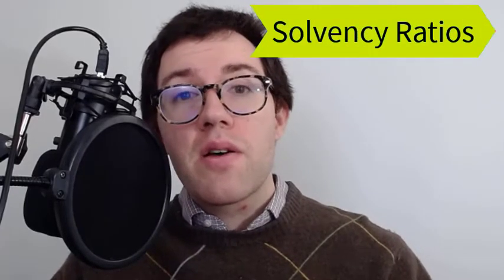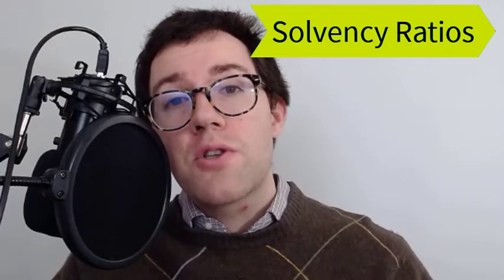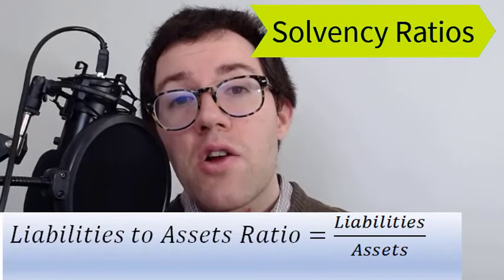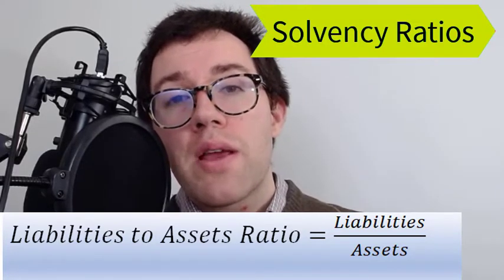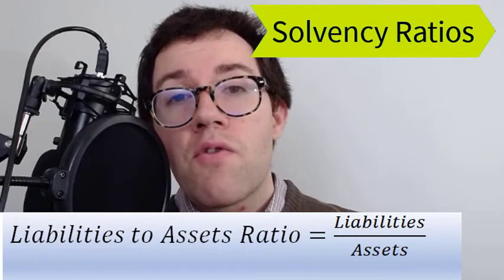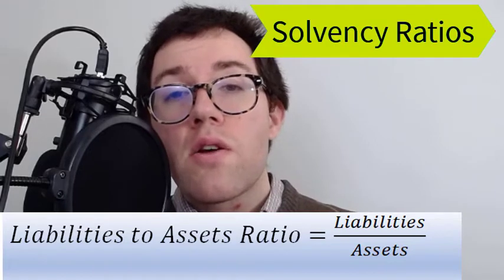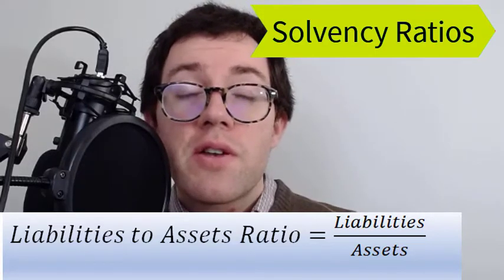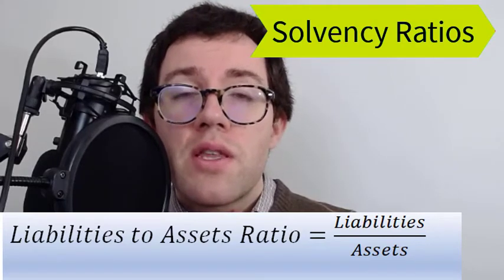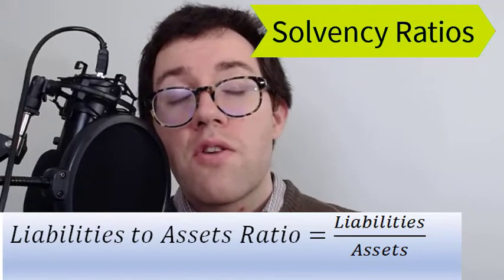Solvency ratios capture a company's ability to stay in business and pay its long-term debts. The first ratio is total liabilities divided by total assets. Since assets equal liabilities plus equity, every asset is funded by either debt or equity. The greater the portion funded by debt, the riskier the company. This is called financial leverage — the more highly leveraged a company, the riskier it is, because interest payments to debt holders are mandatory, unlike dividends.